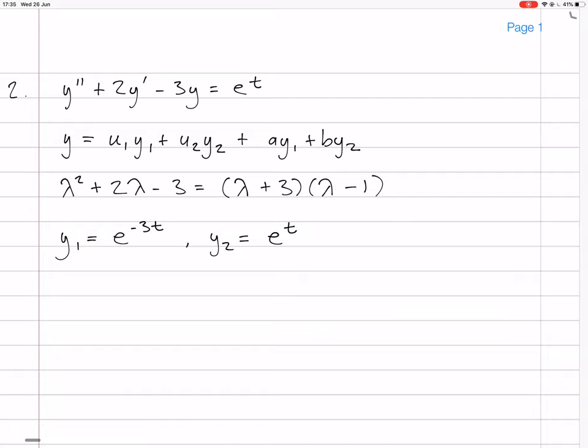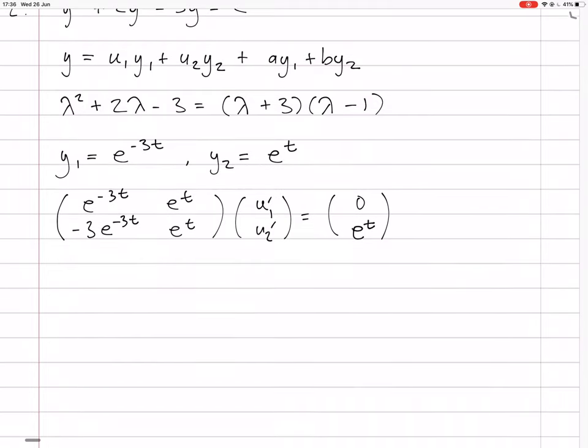Now we've got to find u1, u2. That comes from looking at this matrix, where you have y1 and then its derivative, and you have y2 and then its derivative, multiplied by u1', u2', equals 0 and then we have e^t divided by the coefficient of the second derivative, which is just 1 in this case. So we need to solve this matrix equation for u1', u2'.